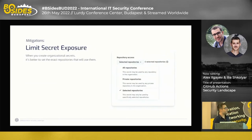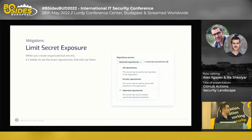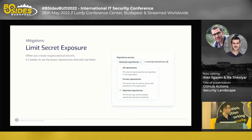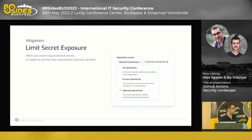Another method effective against the third demo is limiting secret exposure. Every secret defined at organization level can be configured for which repositories it is exposed to. So even if an attacker can exfiltrate every secret he's exposed to, applying this mitigation limits what he can reach.